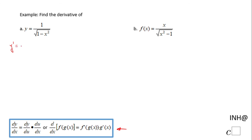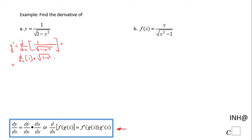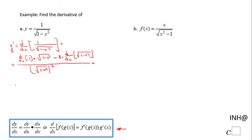y prime — the derivative of y is the derivative with respect to x of this quotient: 1 over the square root of 1 minus x squared. The first thing I'm going to do is use the quotient rule, which says: the derivative of the numerator times the denominator, minus the numerator times the derivative of the denominator, all over the denominator squared — that is, square root of 1 minus x squared, squared.